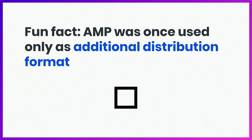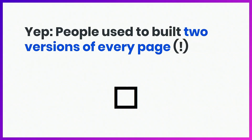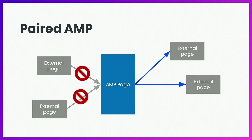AMP was once used only as an additional distribution format. People used to build two versions of every page. This was called Paired AMP, where you have an AMP page, but it wasn't really part of the decentralized web, because non-AMP pages cannot really link to an AMP page that is paired — they link to the canonical page instead.